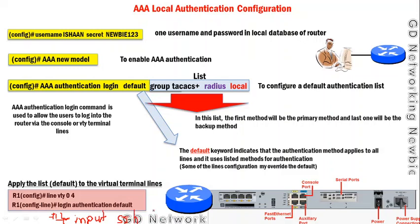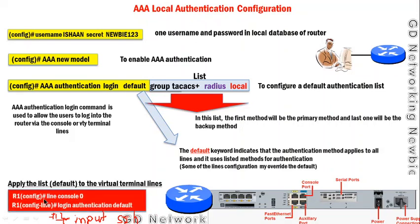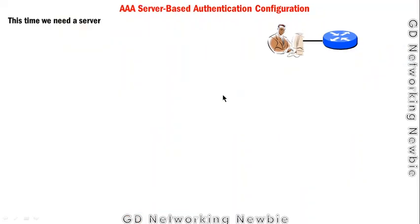This list can also be applied to the console line. Go to `line console 0` and enter `login authentication default`. The keyword `default` refers to the list we created, and the router will check that list's database for user authentication.